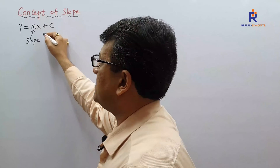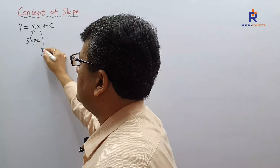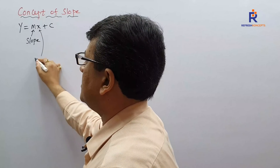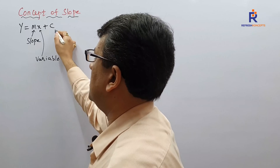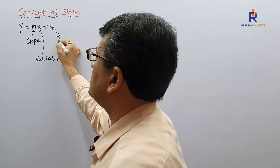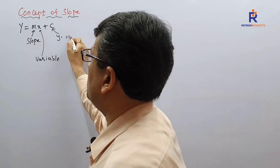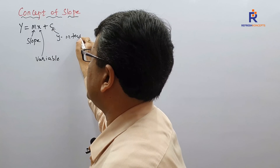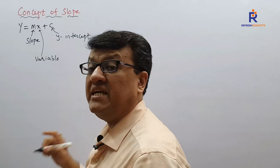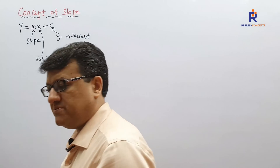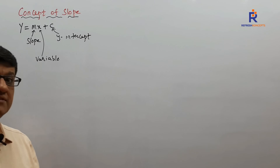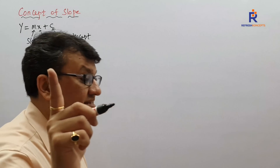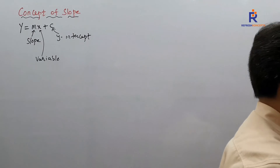x is nothing but my variable, and c is nothing but my y-intercept. I have given an in-depth explanation in the equation of line, where I covered the different types of lines — standard lines, inclined lines — everything is mentioned.